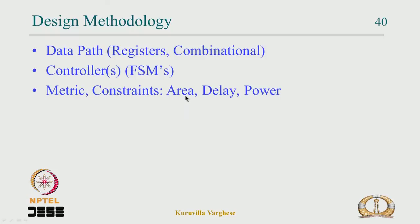In VLSI design we have metrics and constraints. The main constraints are area, delay, and power. A smaller area means smaller chips, lower cost, shorter wire delays, and lower power dissipation — but these are conflicting requirements. You cannot simultaneously minimize area, delay, and power; when you reduce area you may get a larger delay, and a very fast circuit may have large area and high power dissipation.